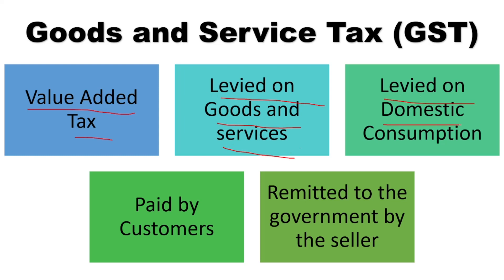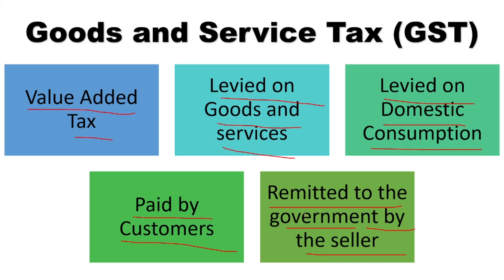GST is levied on domestic consumption. When the consumption or purchase of a product is used or purchased for domestic purposes, it is known as domestic consumption. This is the tax paid by the ultimate customers who are going to enjoy or consume the product. Whatever tax is paid by the customer will be remitted — that is, submitted — to the government by the seller.